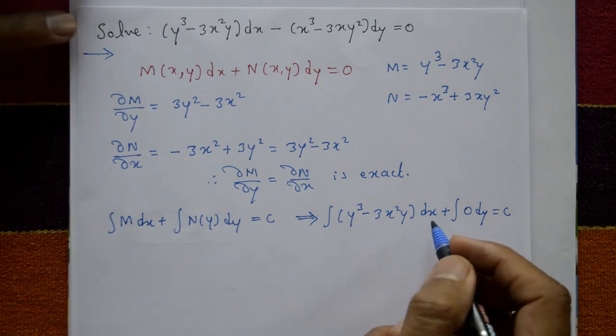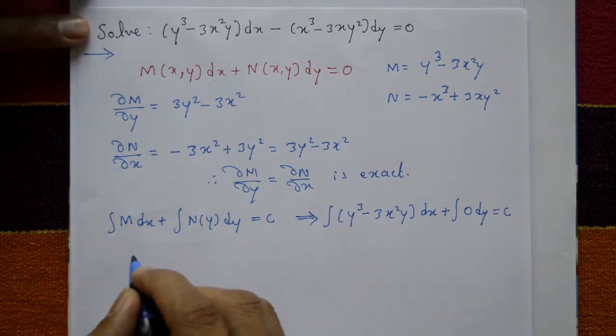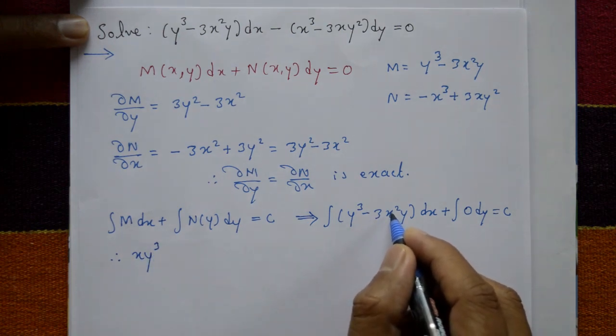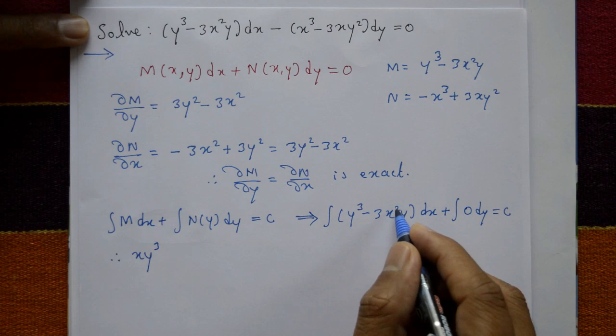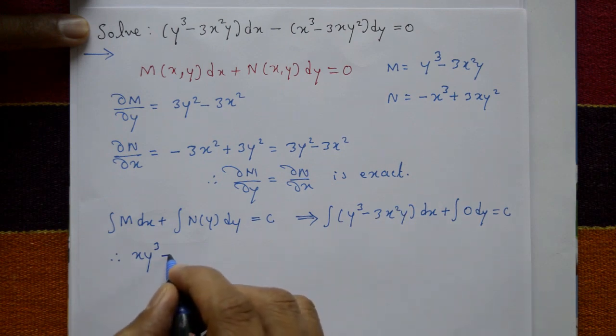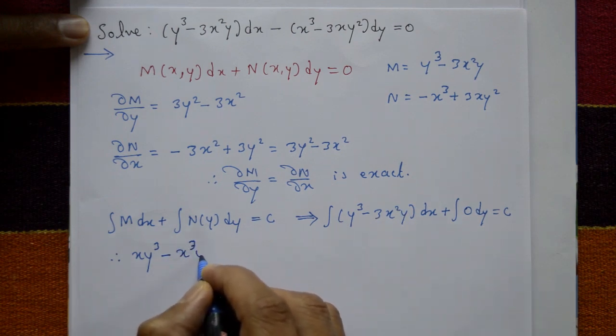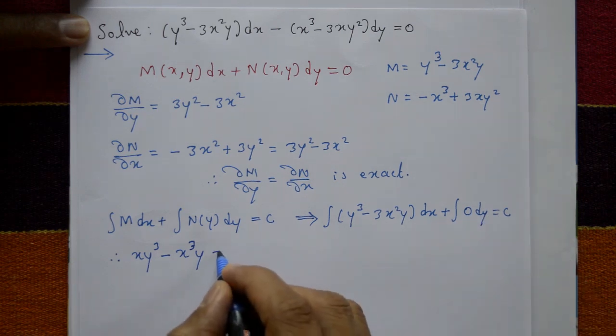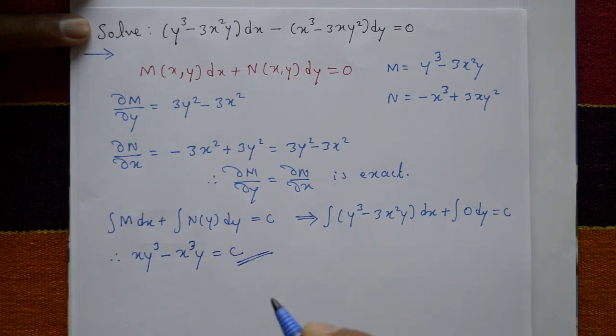Now integrate this one with respect to x. Y cube is a constant, so x y cube. Minus 3 and x square integrate to x cube by 3. 3 cancel, giving minus x cube y. And this is equal to constant. This is the required solution: xy cube minus x cube y equals c.